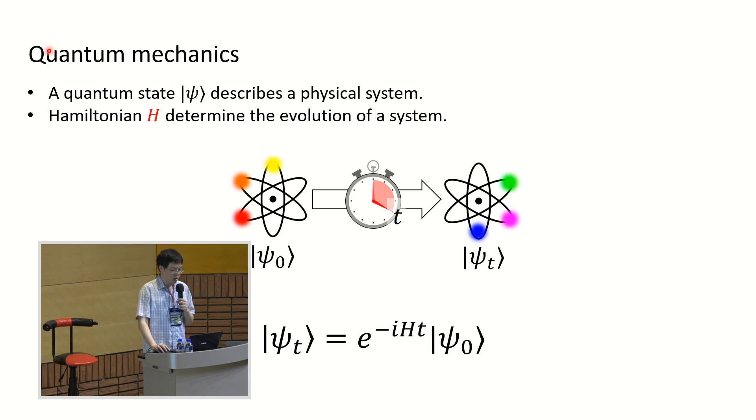We have state vectors, those kets, that describe our quantum system. And there are Hamiltonian H that describe the evolution of a system. So your system will start with some psi zero, some vector, and after some time, the system will be in this state ket psi t. The Hamiltonian H describes the evolution by the Schrodinger equation. Psi t is related to psi zero by this equation: psi t will be exponential e to the minus iHt times psi zero.